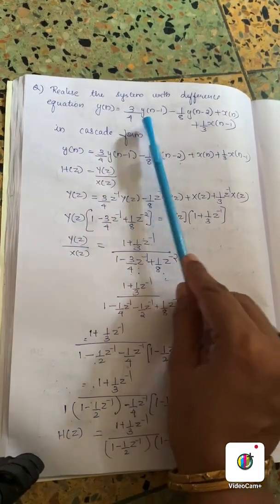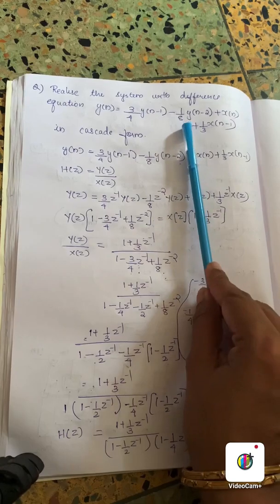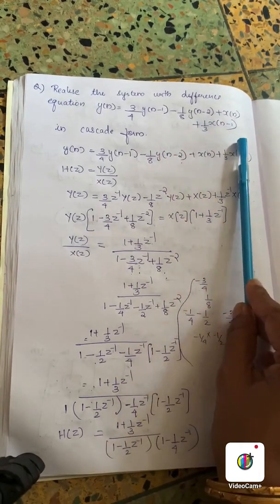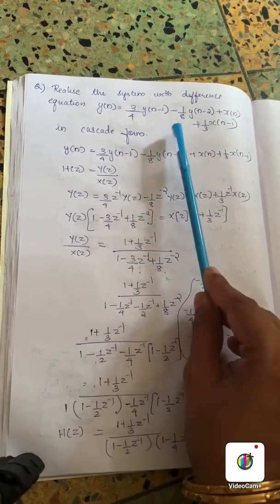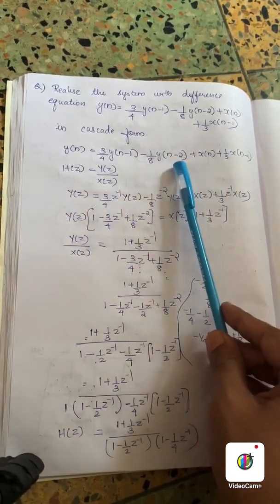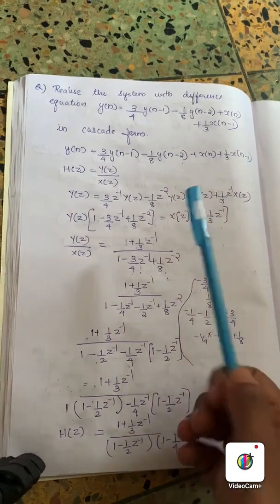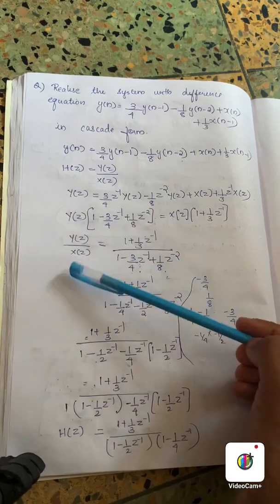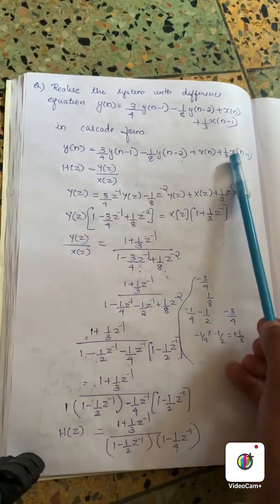Y of n equal to 3 by 4 y of n minus 1 minus 1 by 8 y of n minus 2 plus x of n plus 1 by 3 x of n minus 1. Cascade form, that is our question. We need to do H of z equal to y of z by x of z, then we need to do Z transform.